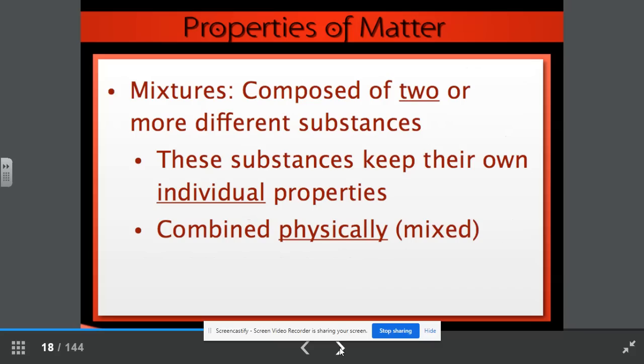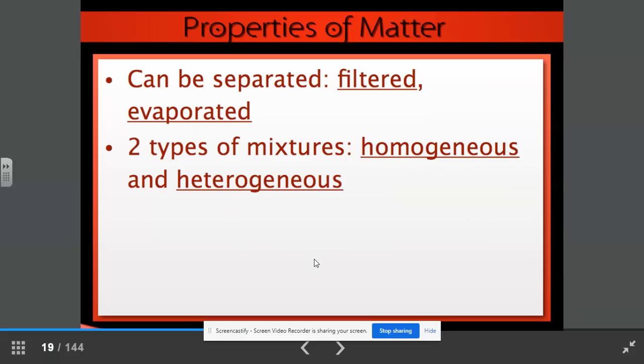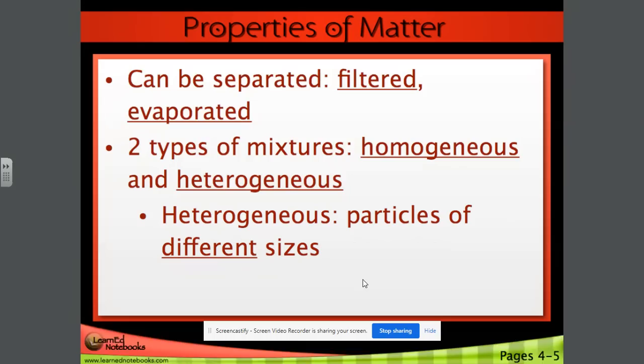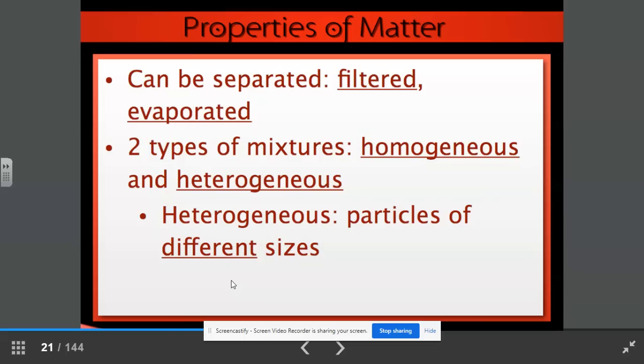Mixtures are composed of two or more different substances. These substances keep their own individual properties. They are combined, which means they are physically mixed. But they can also be separated either by filtration or evaporation. We have two main types of mixtures, homogeneous and heterogeneous. A homogeneous mixture has particles of the same size. An example would be a solution. In a heterogeneous mixture, we have particles of different sizes. Remember, to think about homogeneous could be lemonade, where it all looks the same. Heterogeneous would be salad dressing, where you can look and see the different layers of the ingredients.